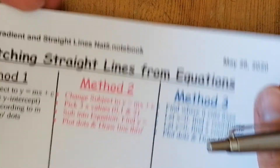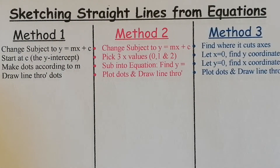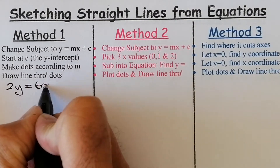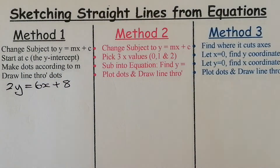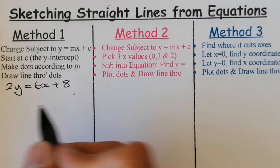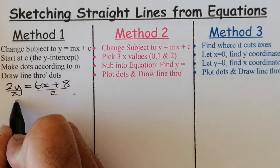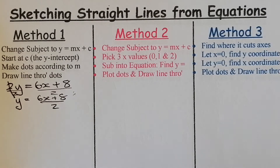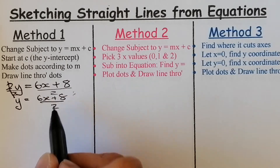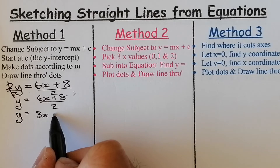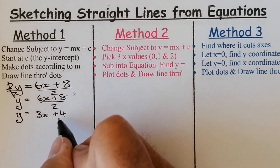Sometimes a straight line equation isn't given in a neat form. For example, 2y equals 6x plus 8. For Method 1 we need y equals mx plus c, so we divide both sides by 2. 2y divided by 2 gives y, and on the right we get 6x divided by 2 equals 3x, and 8 divided by 2 equals 4. So the equation becomes y equals 3x plus 4.